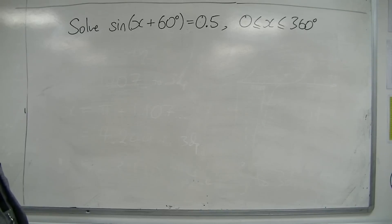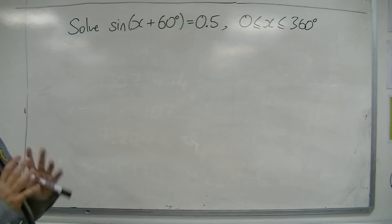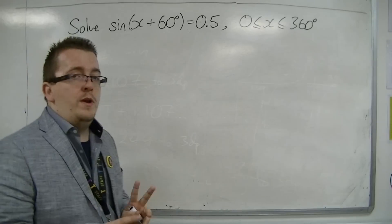So in this first example we're looking at sine of x plus 60 degrees equals 0.5, and we're going to be solving this between 0 and 360 degrees.